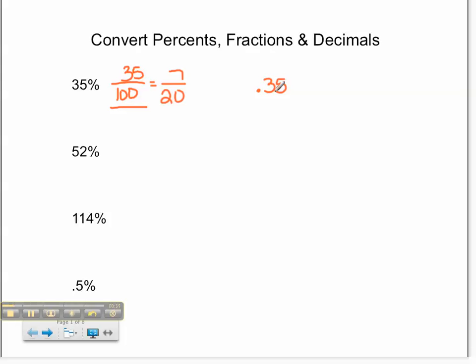52% as a fraction is 52 over 100. 52 over 100 reduces to 13 twenty-fifths. That is, we divide both the numerator and denominator by 4. 52 hundredths as a decimal is written 0.52.